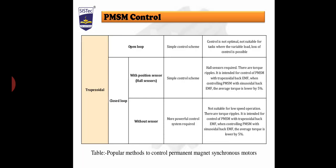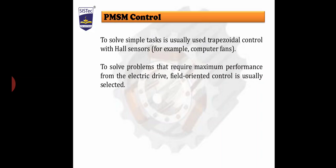These are the two main control schemes, further classified into other sub-schemes. The main schemes are sinusoidal and trapezoidal control, which are the most popular control schemes for permanent magnet synchronous machines. To solve simple tasks, trapezoidal control with Hall effect sensing is usually used — for example, in computer fans. To solve problems requiring maximum performance from the electrical drive, field oriented control is usually selected. This lecture covered the different control schemes used in permanent magnet synchronous machines.